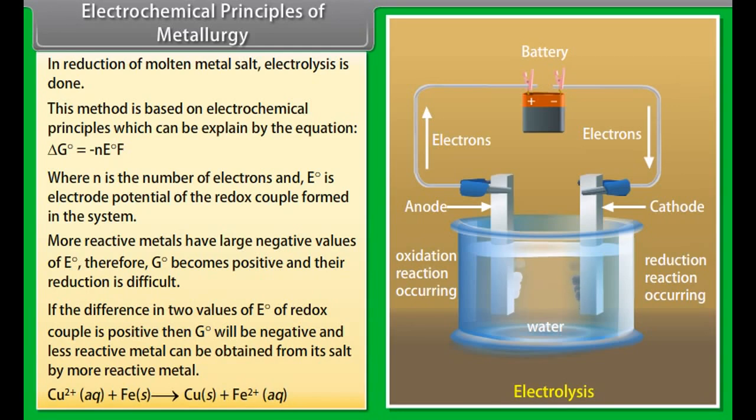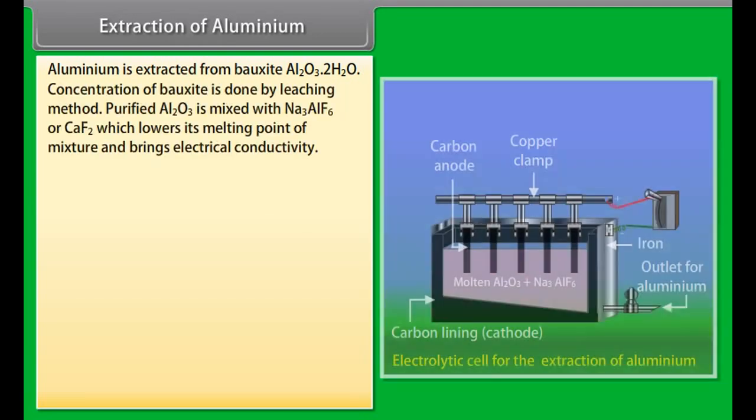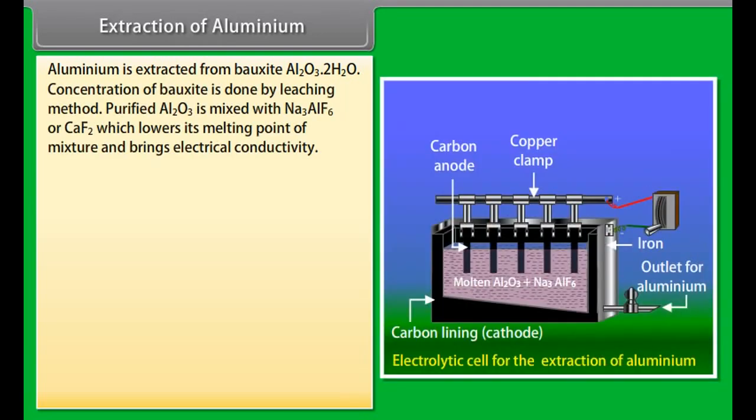Extraction of zinc. The reduction of zinc oxide is carried out by coke at a temperature higher than that of Cu2O because zinc is more reactive than copper. The oxide is made into briquets with coke and clay and then heated. Carbon monoxide formed can also reduce ZnO further to zinc. The impure zinc is called spelter. It is refined by distillation followed by rapid cooling.